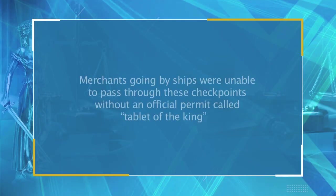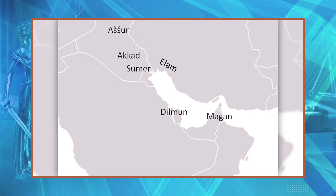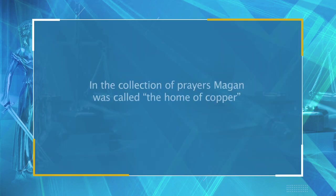In the early 2nd millennium BCE, trade was very much under royal supervision. There were checkpoints along the Euphrates River, and merchants going by ships were unable to pass through these checkpoints without an official permit known as the Tablet of the King. The temple organised the standard systems of weights and measures used in Mesopotamia. Dilmun and Meluhha had their own system. Magan, which has been identified with Oman, was another important trading post. In the collection of prayers, Magan was called the home of copper and also the source of the black stone for several statues of Gudea of Lagash. Items such as ochre, semi-precious stones and ivory were also acquired in Magan on behalf of the Ur temple complex.